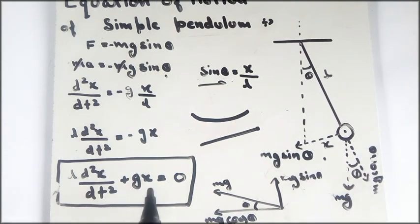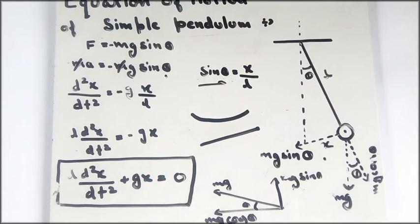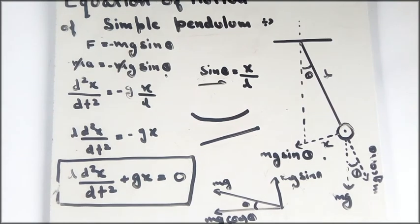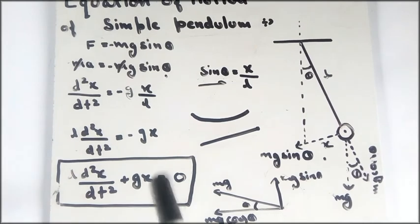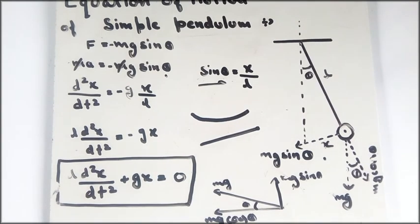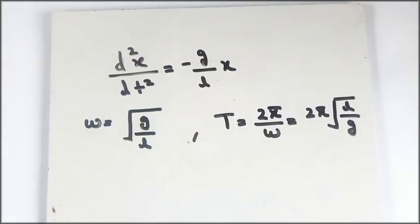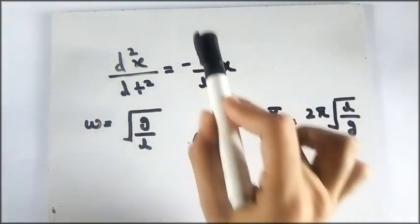This is the equation of motion of a simple pendulum. Now let's find the time period and angular frequency from this equation. This is straightforward if you have watched the video on deriving the equation of motion of simple harmonic motion.